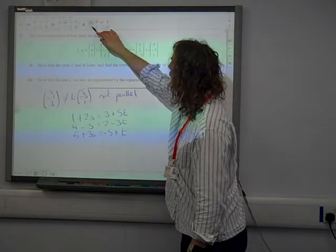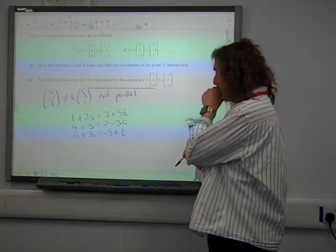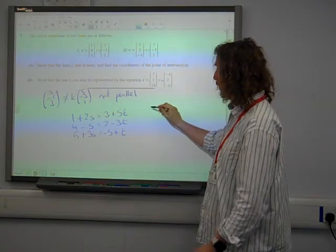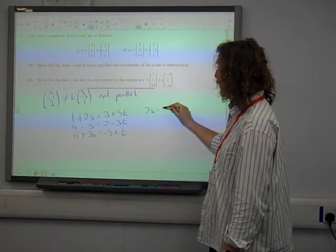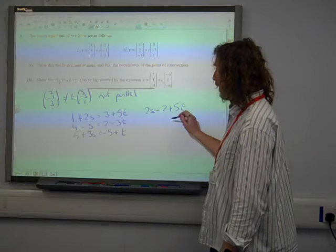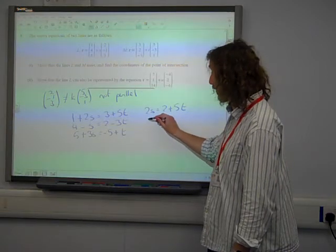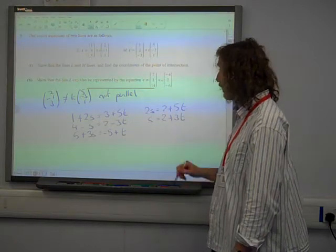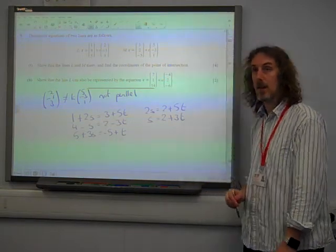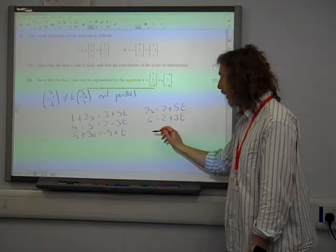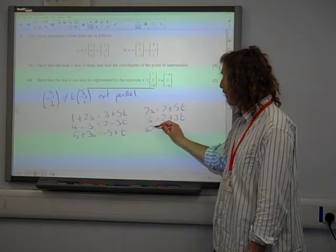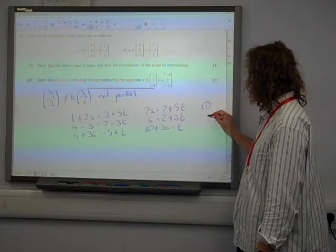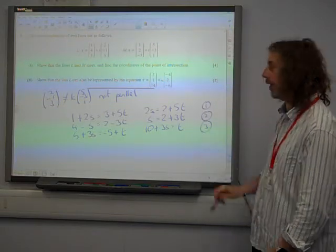So we need to solve these. Shall we simplify them first? 2s is 2 plus 5t. This one's quite nice. This tells me that s equals 2 plus 3t. I'll use that in a minute. And this equation tells me that 10 plus 3s is t. So there, we've simplified our three equations.